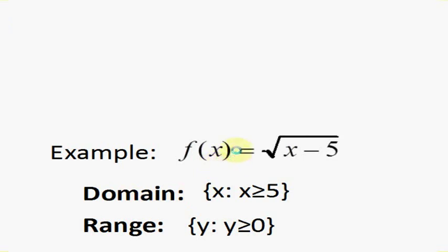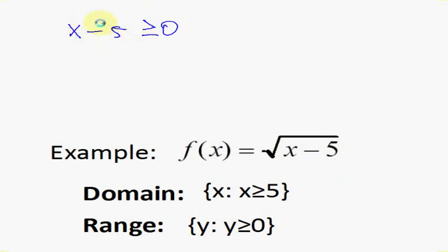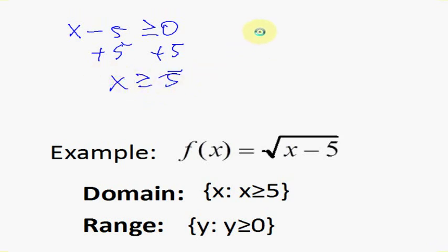Now if we do a function example, we have a radical function. We have to understand the nature of the function and when it is undefined. We know a radical cannot be negative, so the inside — x minus 5 — needs to be greater than or equal to 0. We can have 0 or positive values, but not negative. So our domain is found by solving x minus 5 ≥ 0: add 5 to both sides and you get x ≥ 5. Our domain starts at 5, includes 5, and goes all the way up to infinity — written as [5, ∞).